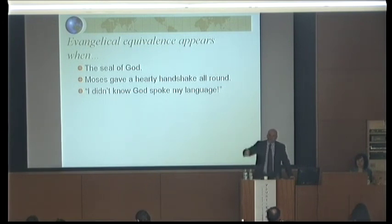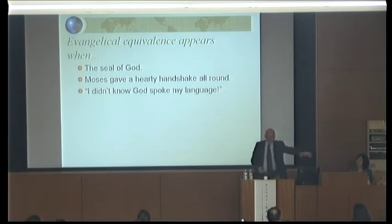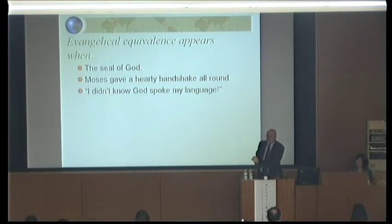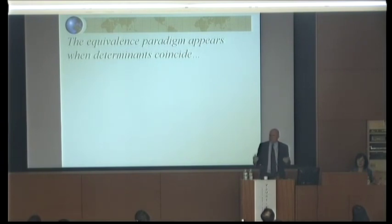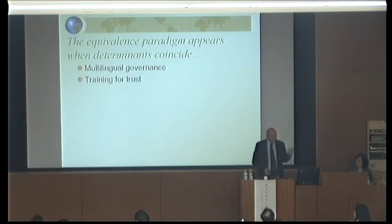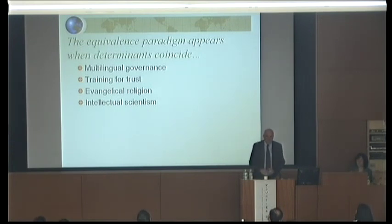Evangelical equivalence—what we call dynamic equivalence and cultural adaptation—was developing in the same years as European multilingualism, using the same term 'equivalence' but to solve an entirely different problem. The kind of equivalence Nida wanted for Bible translation in the jungles is not the same kind needed in the European Commission—completely different—but the same term allowed people to read each other and form a paradigm where they talked about translation using the same vocabulary with basic understanding, even though the jungles are not like Brussels.